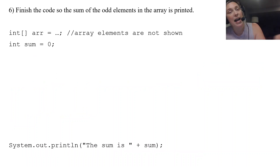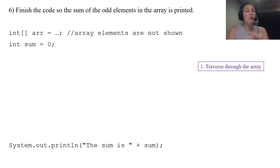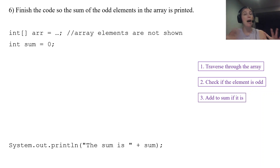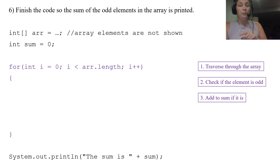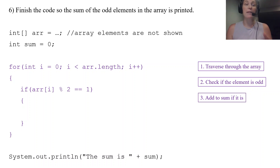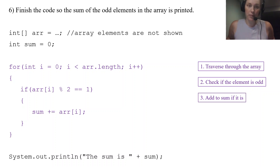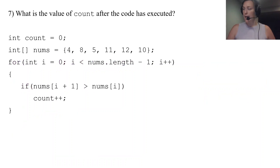Practice problem 6 — finish the code so the sum of only the odd elements is printed. Same traversal as before, but now add an if statement to check if each element is odd: if (arr[i] % 2 == 1). If it is odd, add it to sum. No else statement needed — if it's not odd, do nothing.